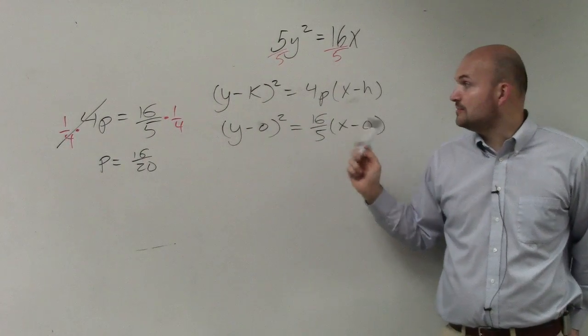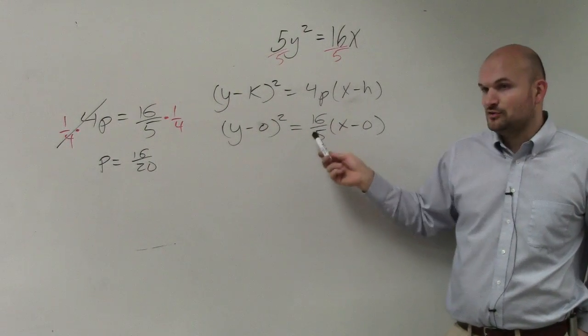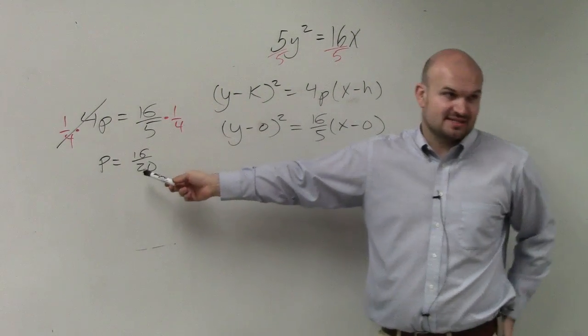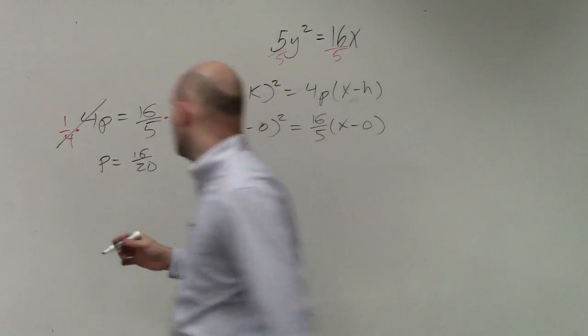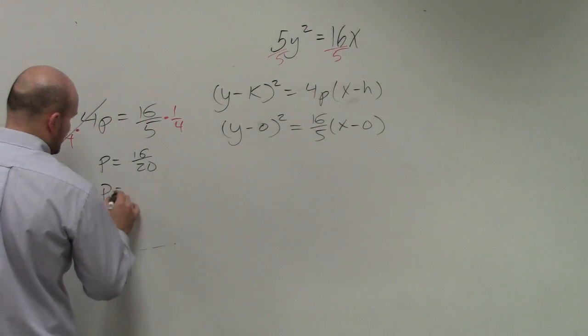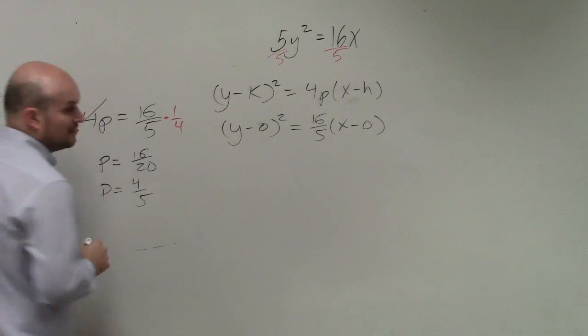And therefore, we know that 4p is equal to 16 over 5. We solved for p and got 16 over 20, which we can divide by 4 on the top and bottom. So p is going to equal 4 fifths. Does everybody agree with me?